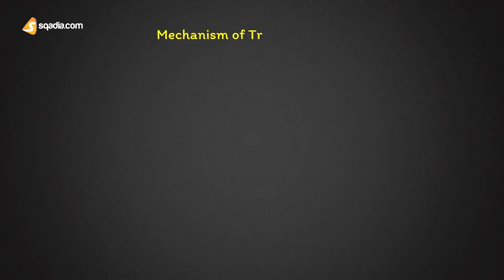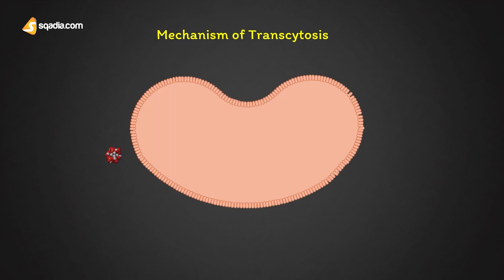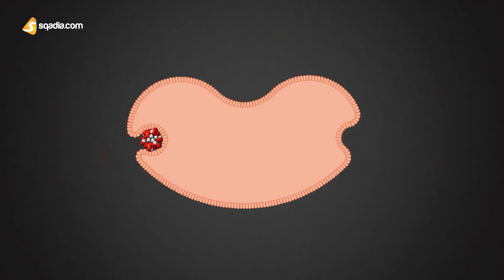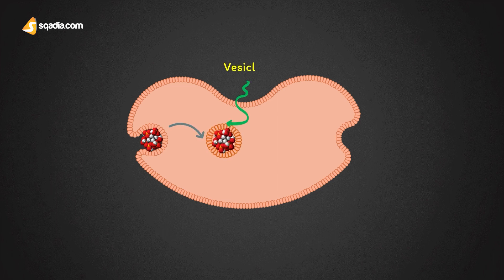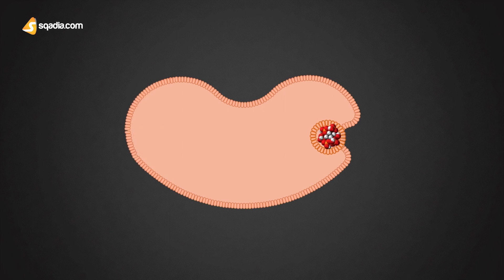If we talk about the mechanism of transcytosis, what happens is that the cell encloses the extracellular substance by invagination of the cell membrane and it forms a vesicle. This vesicle then moves across the cell and is thrown out through the opposite cell membrane by means of exocytosis.